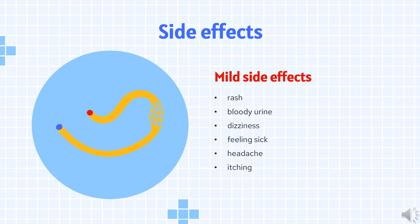Side effects may affect up to 1 in 10 people and include: stomachache, abnormal results of blood tests measuring liver function, anemia, bleeding from the skin, nose, vagina, bowel, mouth, throat or stomach, rash, bloody urine, dizziness, feeling sick, headache, and itching.